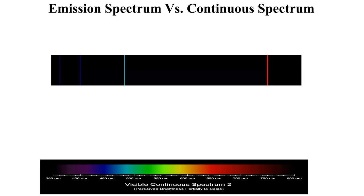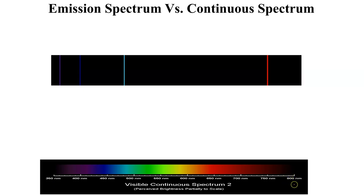Here's an emission spectrum versus a continuous spectrum. The emission spectrum has a sequence of separate colors — you can see they're split into four different bands. The continuous spectrum doesn't do that; it shows all the colors of the rainbow, or ROY G BIV, from 350 all the way to 800 nanometers — those are all the wavelengths for colored light. Violet has the shortest wavelength and the highest energy at 350 nanometers, and red has the longest wavelength and the weakest energy.